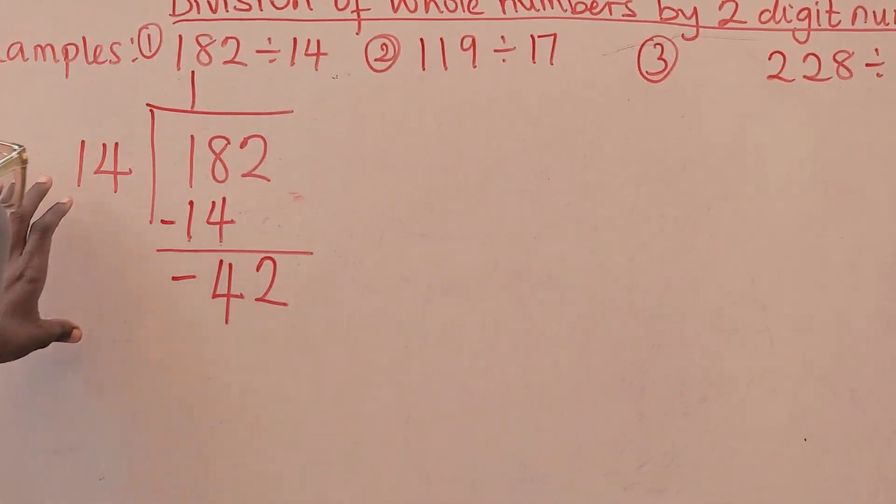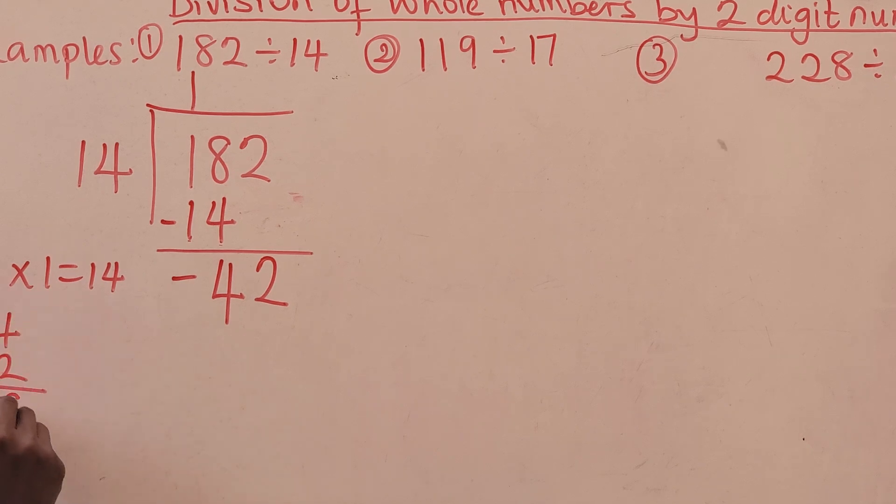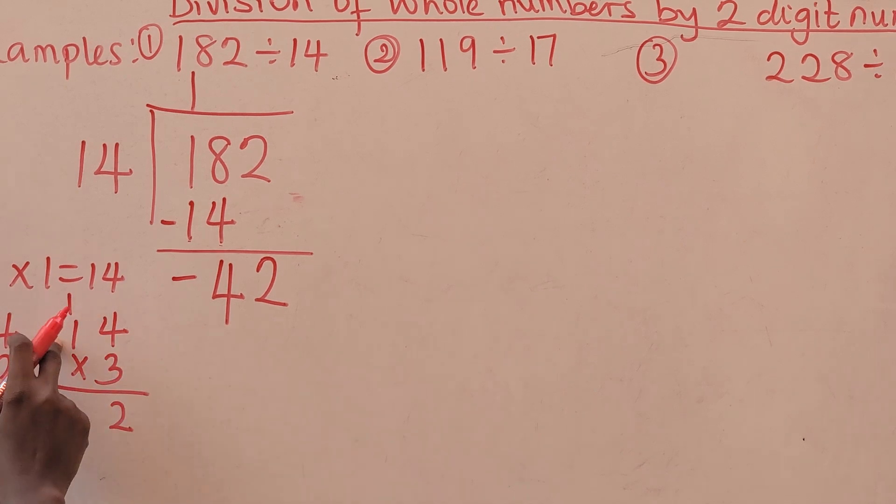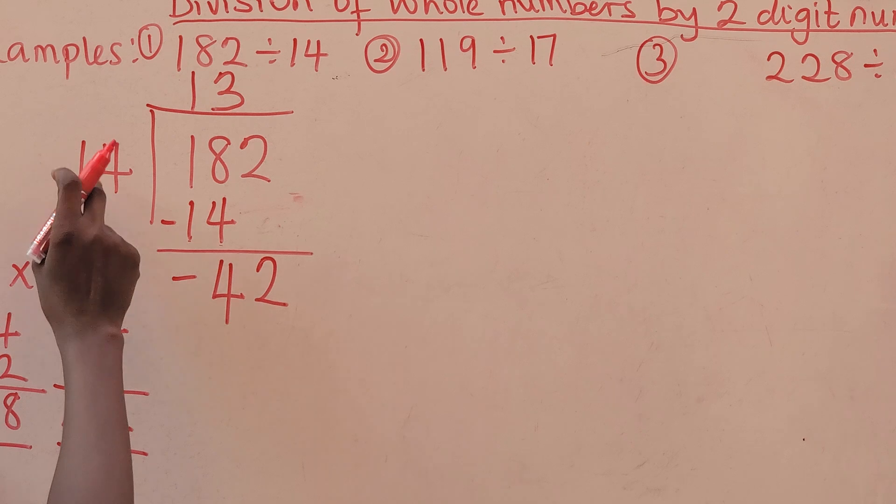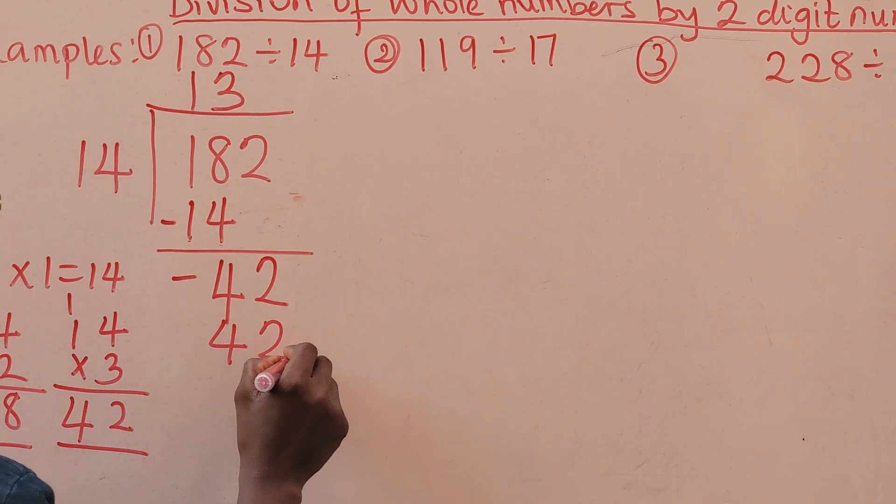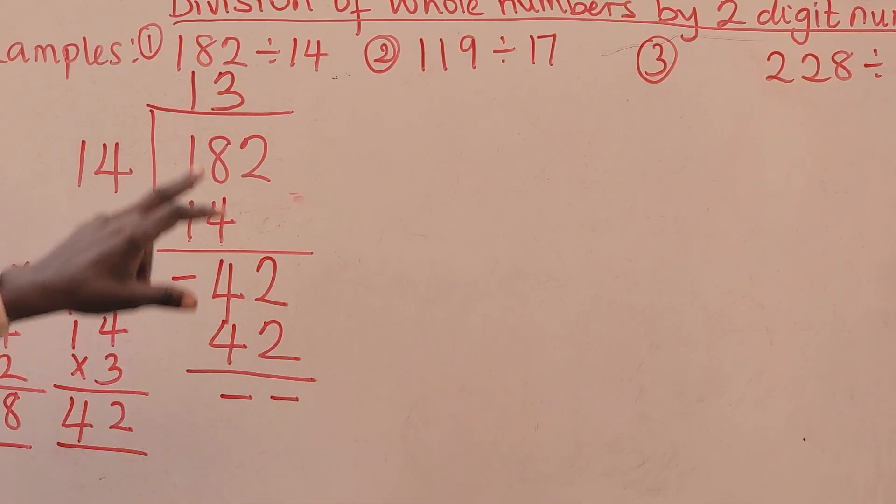Now, 42 divided by 14. That's where multiplication comes in. You can count your 42 and begin to divide. Or, you do your multiplication table. 14 times 1, 14. 14 times 2. 2 times 4, 8. That's 28, you are yet here. 14 times 3, that's 12. 3 times 1, 3 plus 1, 42. So, it means 14 times 3 is 42. 42 divided by 14 is 3. 14 times 3 is 42. 42 take away 42. You are left with nothing. So, our final answer is 13.